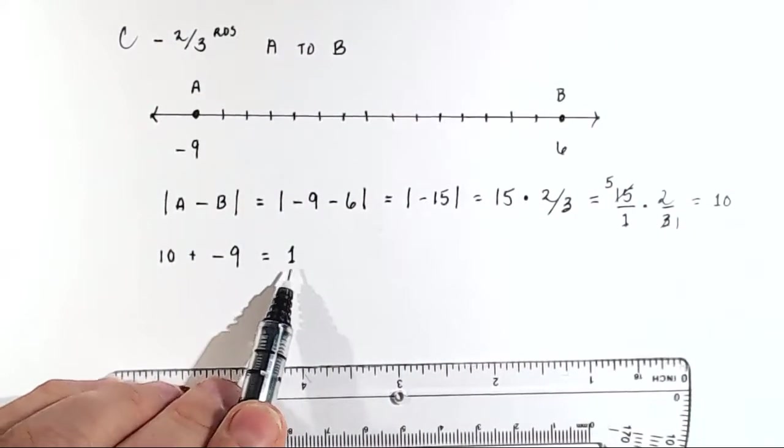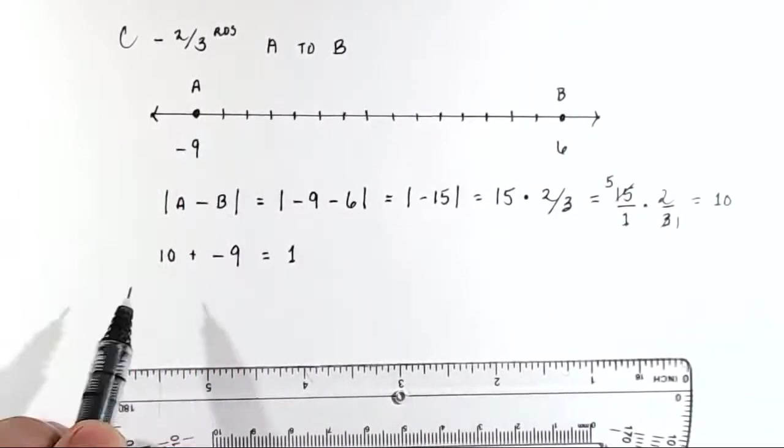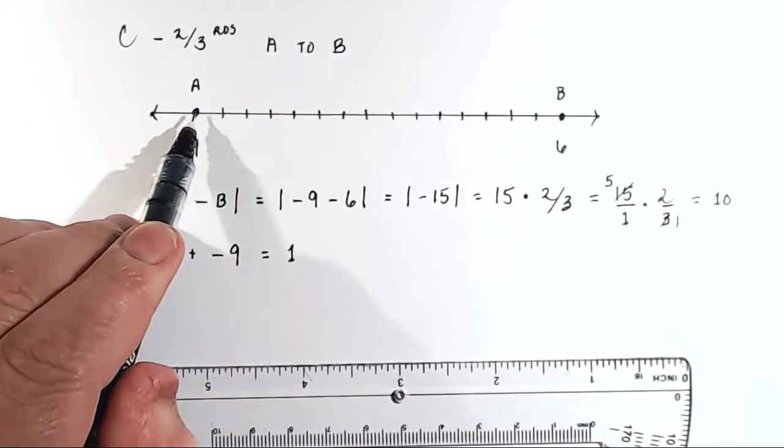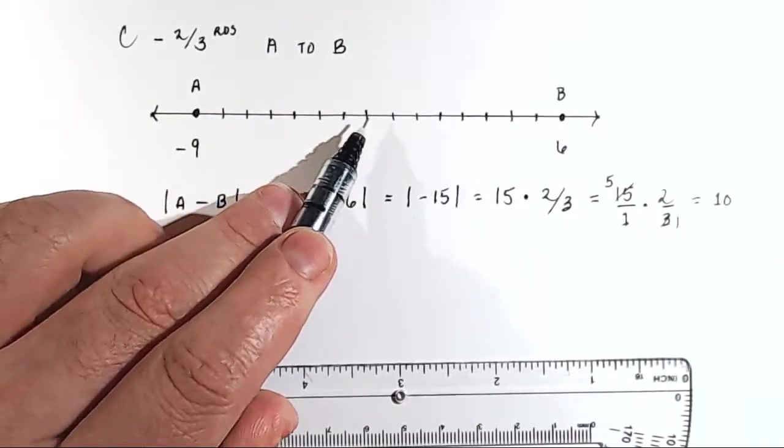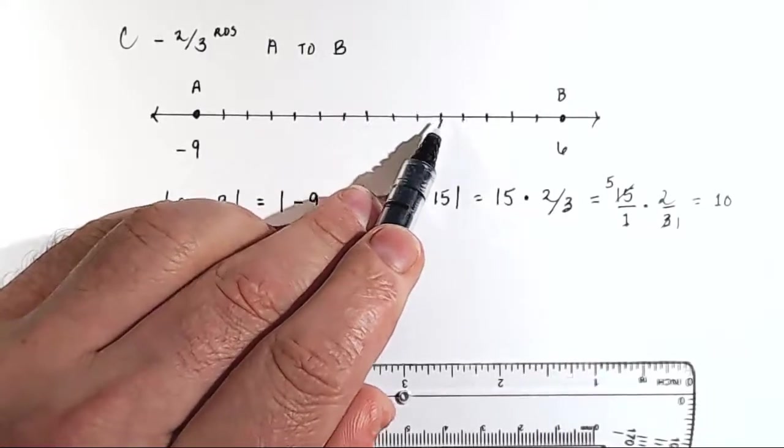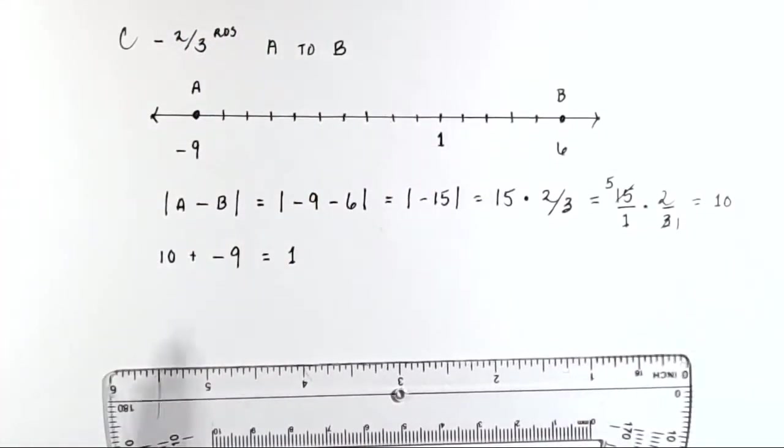So now I would just go find where 1 is. So I'd say, well, I'm going to add 10. So 1, 2, 3, 4, 5, 6, 7, 8, 9, 10. So that must be position 1. And let's check if it is.